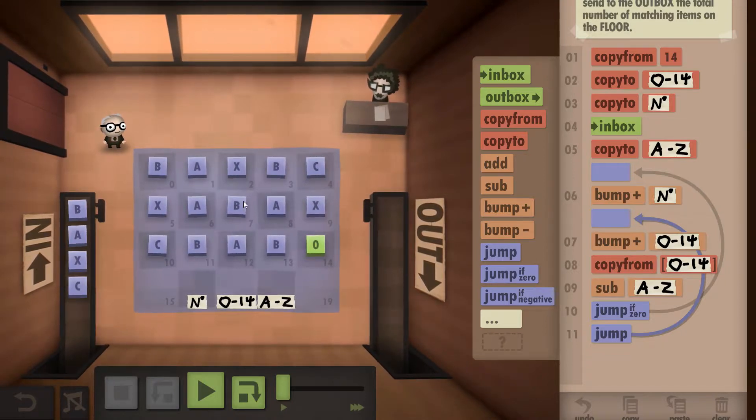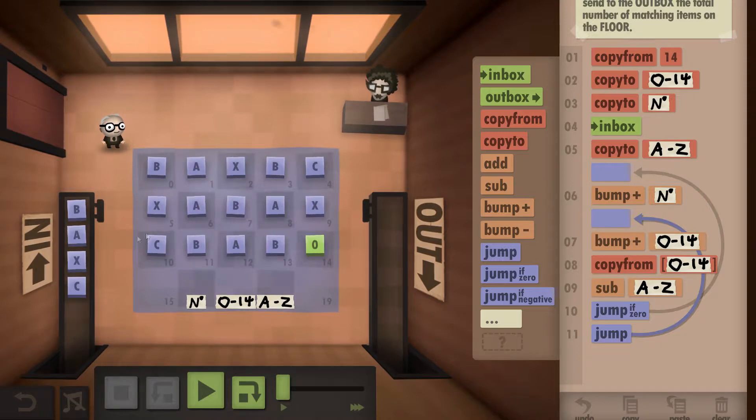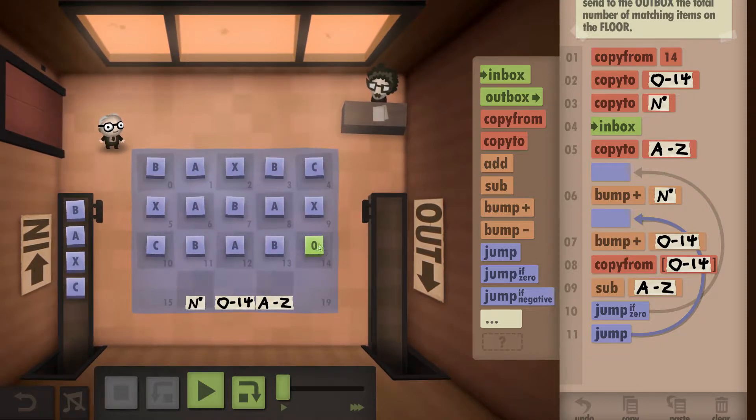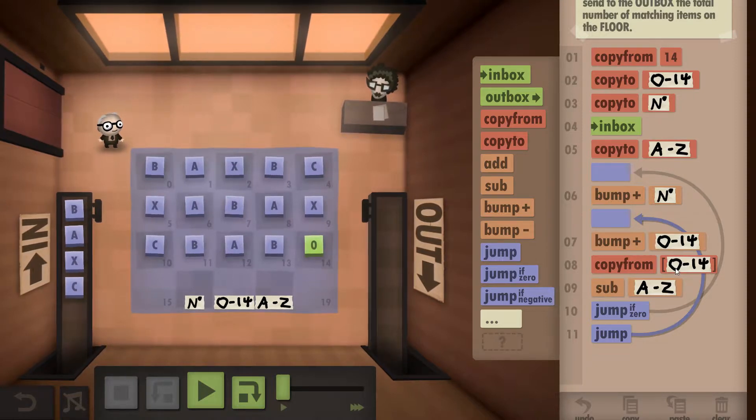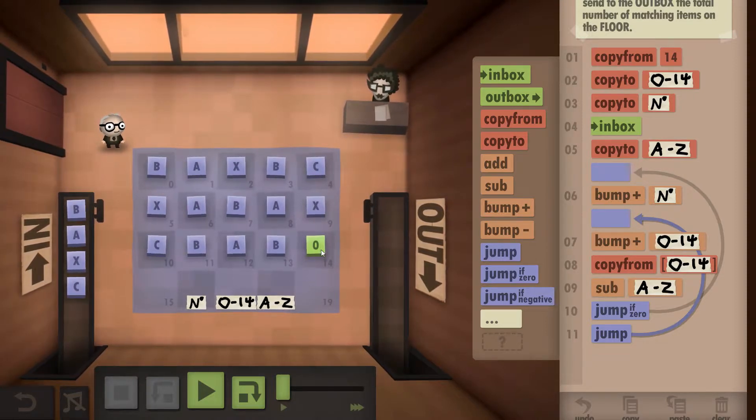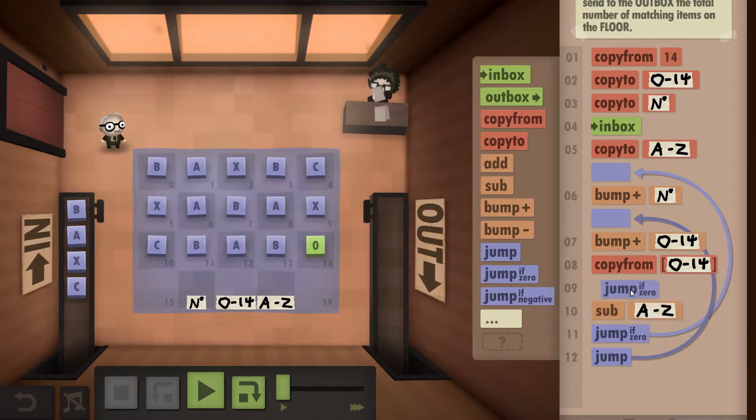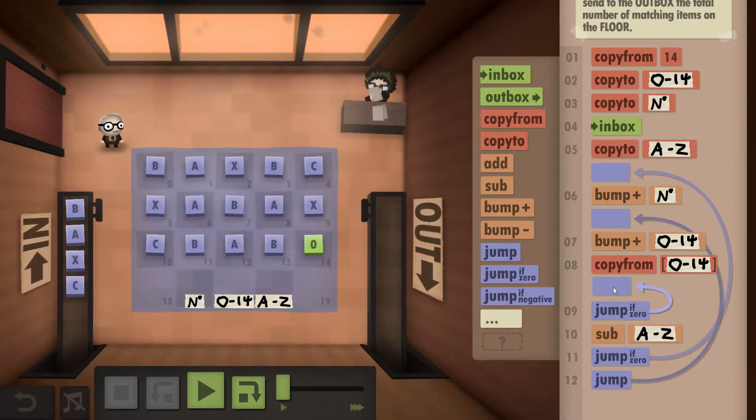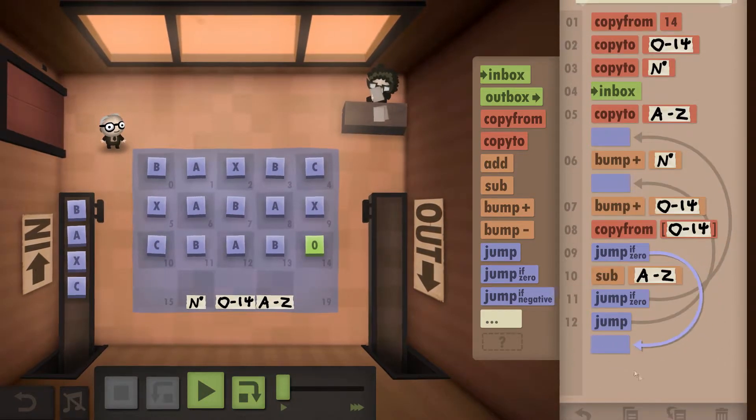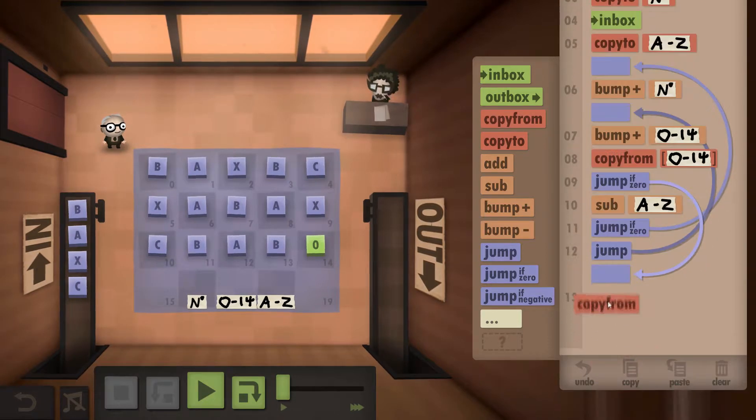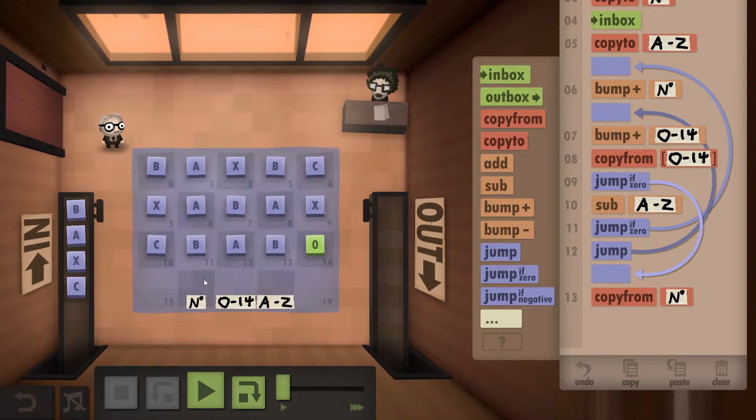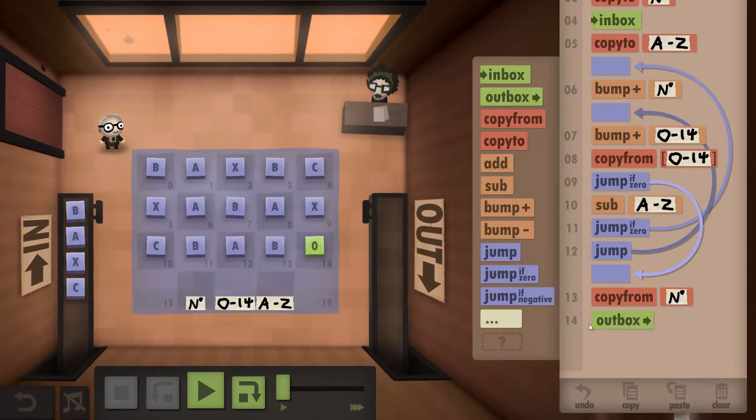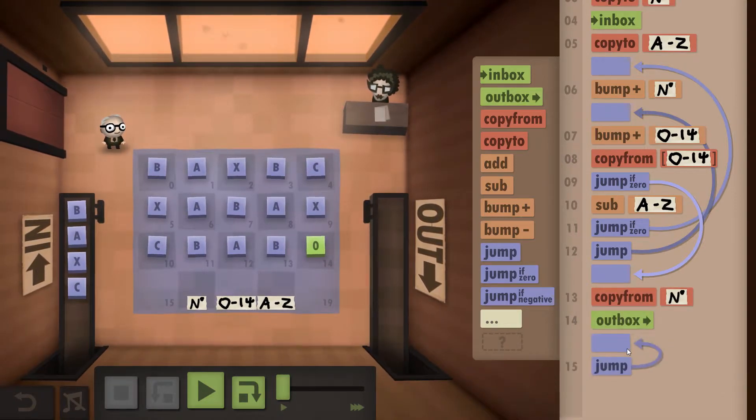Now at some point, it's going to hit here where it's a 14. So if at any point we copy from where this tells us to and it's zero, just here, we know we've got the final answer. So we need to then copy from here. We're going to get the total that we're up to, we are going to outbox it, and then we use the jump command and go all the way back up to the top.